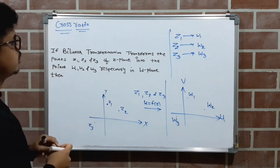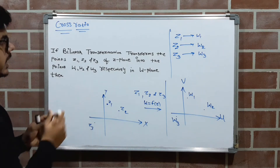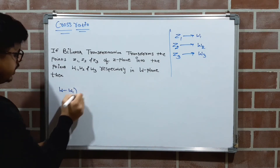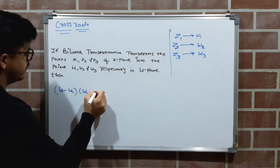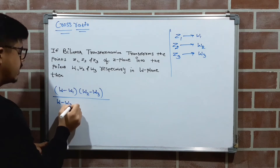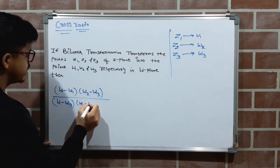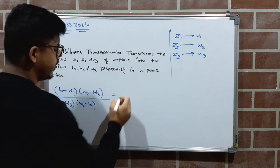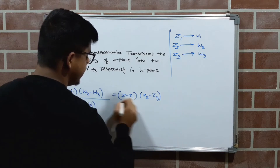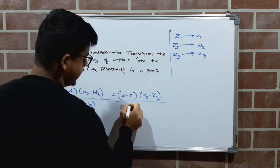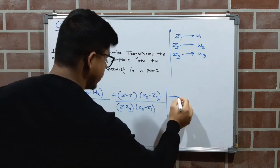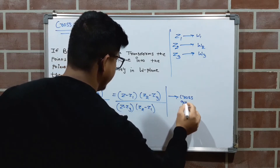When you get this type of correspondence, we say there is a unique relation between these points, and we call that relation the cross ratio. The cross ratio formula is written as: (W − W1)(W2 − W3) / (W − W3)(W2 − W1) = (Z − Z1)(Z2 − Z3) / (Z − Z3)(Z2 − Z1). This is the cross ratio formula.